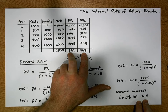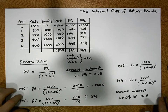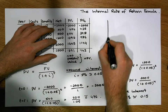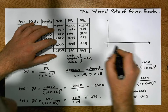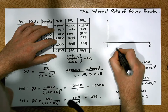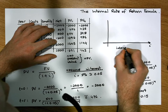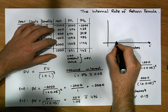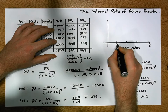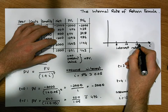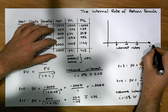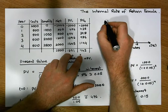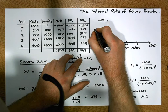Let's create a graph to try to understand what the internal rate of return is. We'll create a vertical axis and a horizontal axis — the horizontal axis will represent interest rates, with values such as 5%, 10%, and 15%. The vertical axis will represent the net present value, or NPV, of our project.